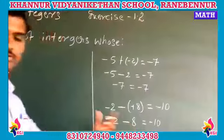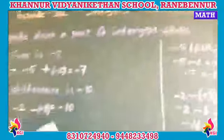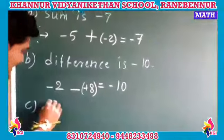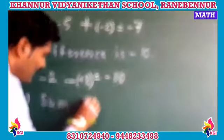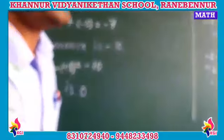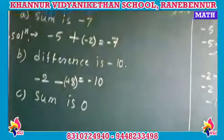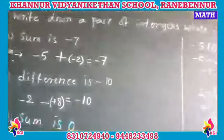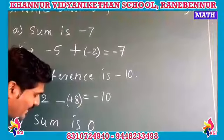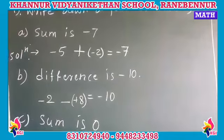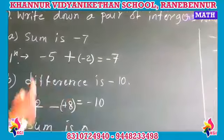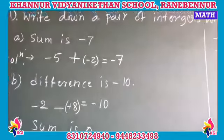Now we go for question C. The C question: sum means 0. Any two integers we have to take — very easy. I am going to take 5 plus minus 5, which equals 0. Remember, one is a positive integer and one is a negative integer. When subtracted, we get 0.